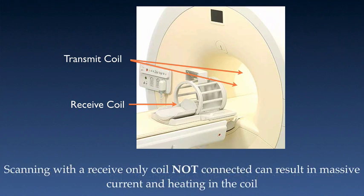It's very important to remember that you should never scan a receive-only coil that is not physically connected to the magnet. If the coil is not connected, the system does not know the coil is there, and therefore it won't be detuned during RF transmission. The least that could happen would be that you would damage or destroy the coil. The worst thing that can happen is that it would catch fire. So it is important to always scan with these coils plugged in, or remove them from the magnet if you're not going to be using them.